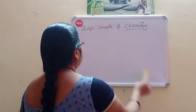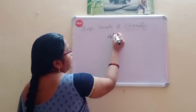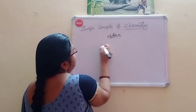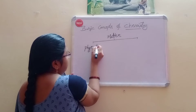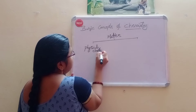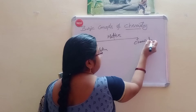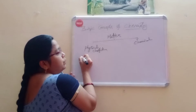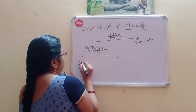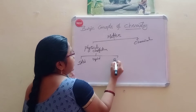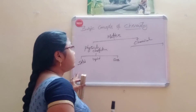Next, classification of matter. Matter is classified into two types: physical classification and chemical classification. Physical classification is divided into three types: solid, liquid, and gas.